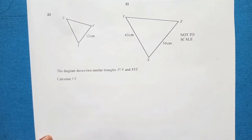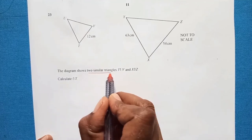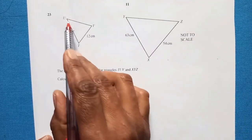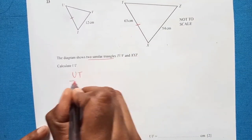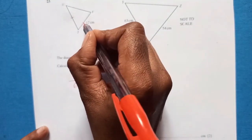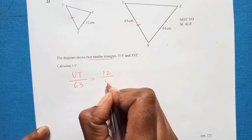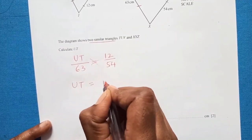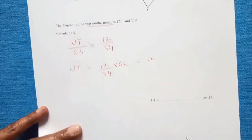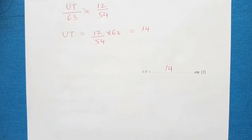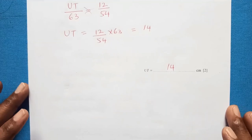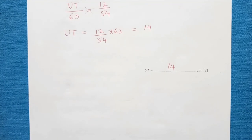Question 23 (last question): two similar triangles are given. Calculate UT. Since the triangles are similar, corresponding sides are in proportion: UT/63 = 12/54. Cross-multiplying: UT = (12 × 63)/54 = 14. So UT = 14 cm. That's the end of this paper. I hope you understood all the questions. If you have any questions, leave them in the comments. Please like, share, and subscribe. Thank you!